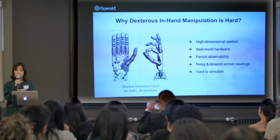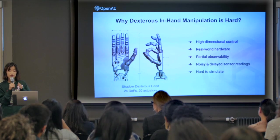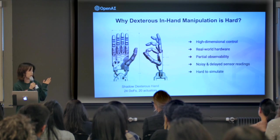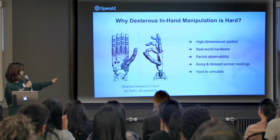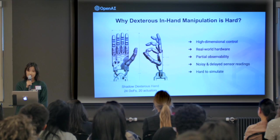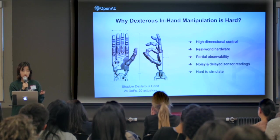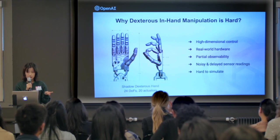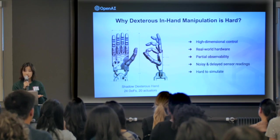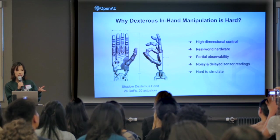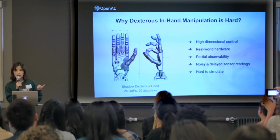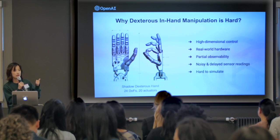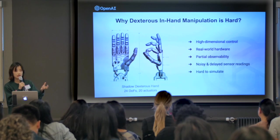Why is it hard? First of all, the system has very high dimensionality. For example, our robot — a Shadow Dexterous Hand, as shown in this illustration — has 24 joints and 20 actuators. The task is especially hard because during manipulation, a lot of observations are occluded and can be noisy. For example, sensor readings can be wrong or blocked by the object itself.